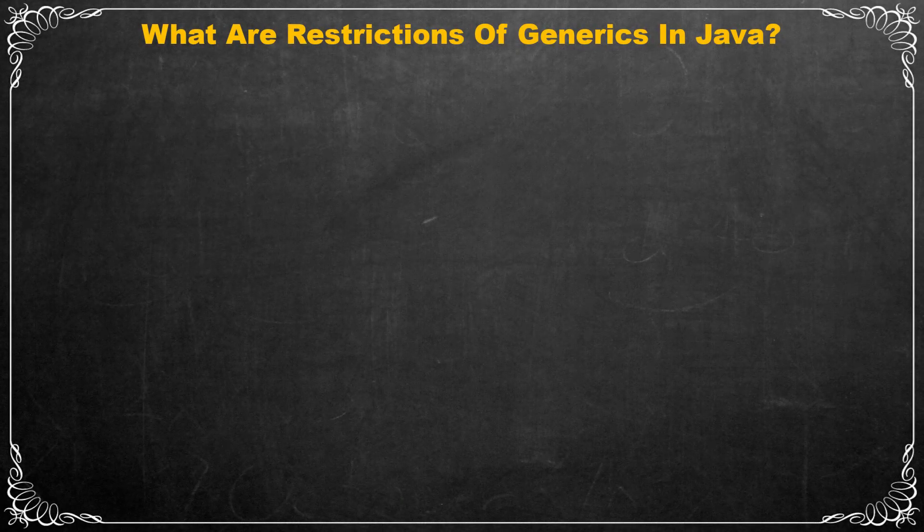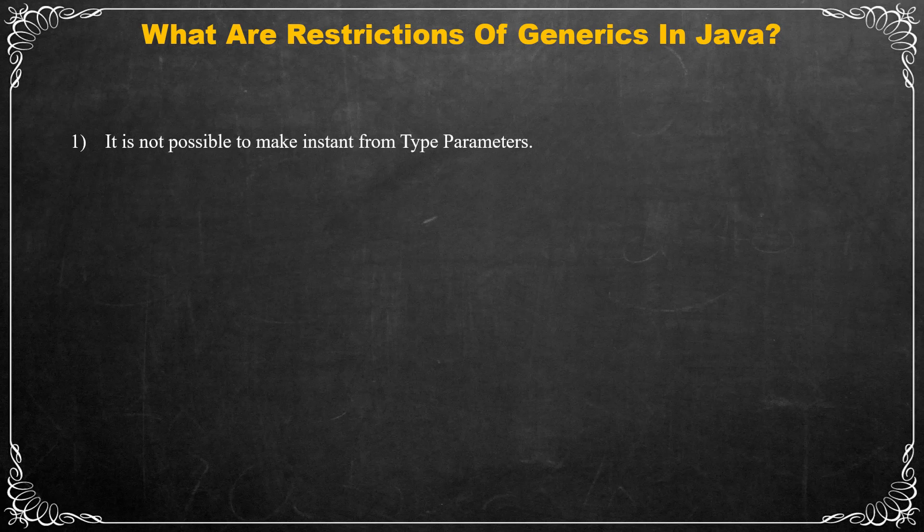Hello and welcome to my channel. In this video we want to learn about some restrictions of generics in Java. The first restriction is that it is not possible to create an instance of a type parameter.